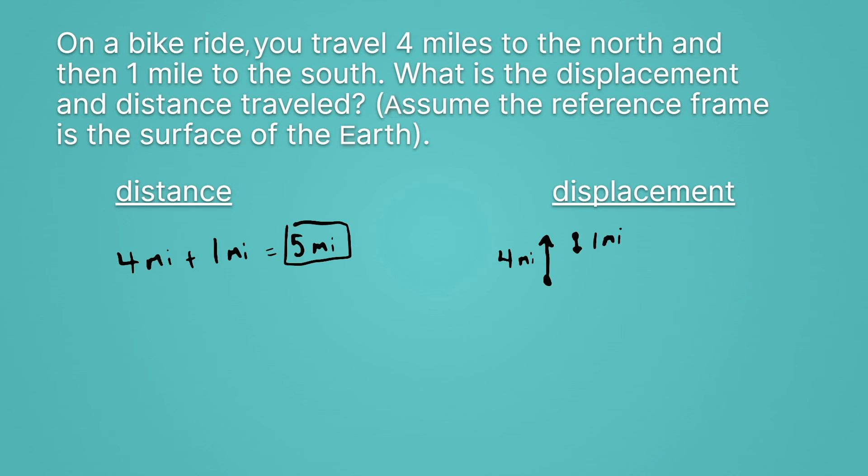So again, this is a similar circumstance to our displacement when we were on that bus ride. The difference between our starting and ending location is just the difference between these two lines. So we're going to do four miles minus our one mile gives us a three mile displacement. So our displacement should be three miles.